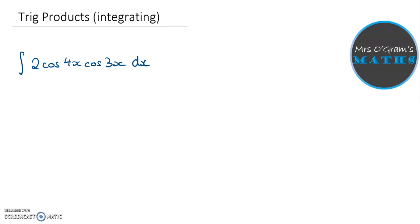All right, we're going to do a couple of examples here of integrating trig products. So we're starting off with this one, 2 cos 4x cos 3x. As soon as you get something that's looking kind of like that, you should recognize it as being similar to something on your formula sheet.